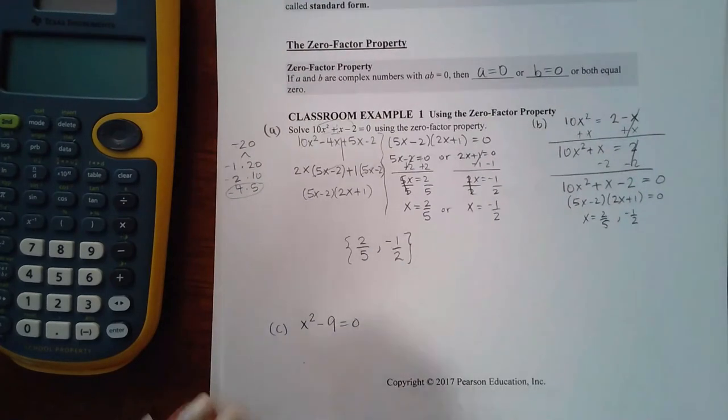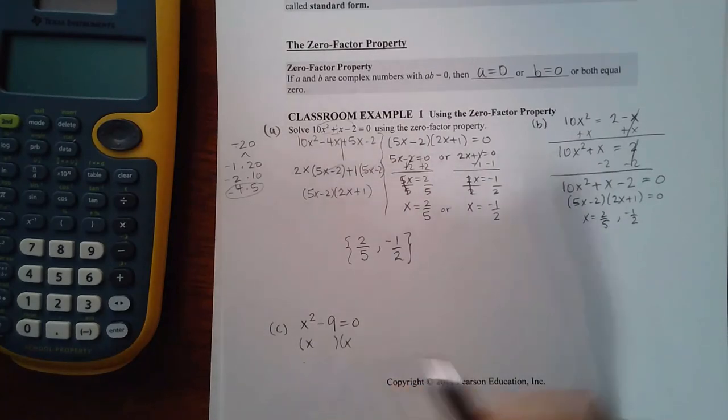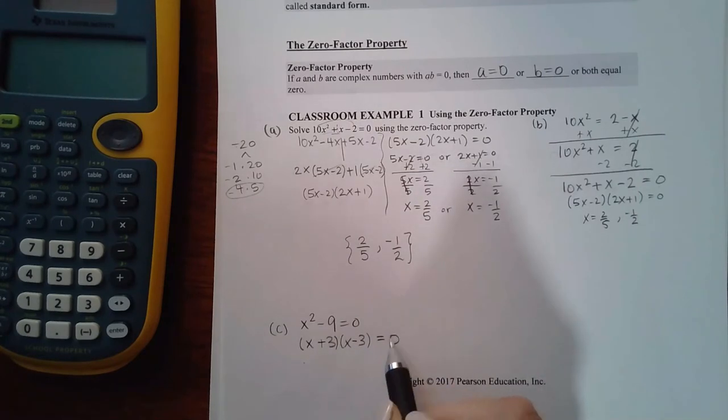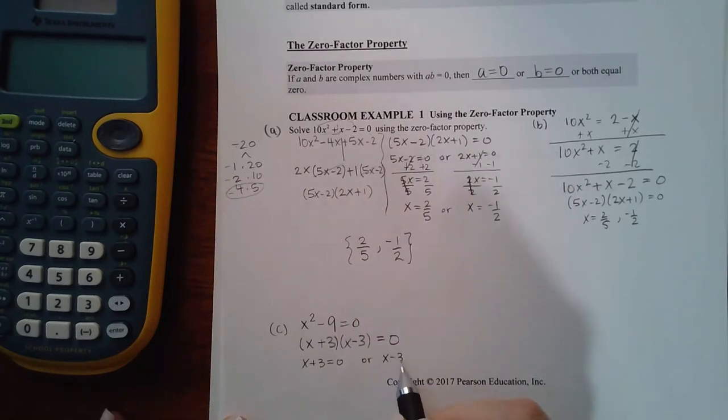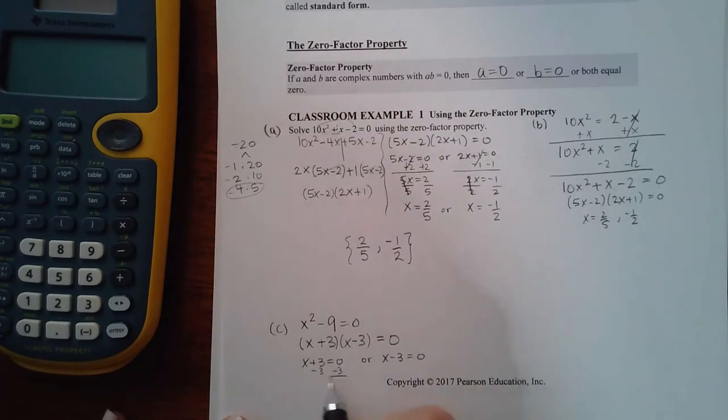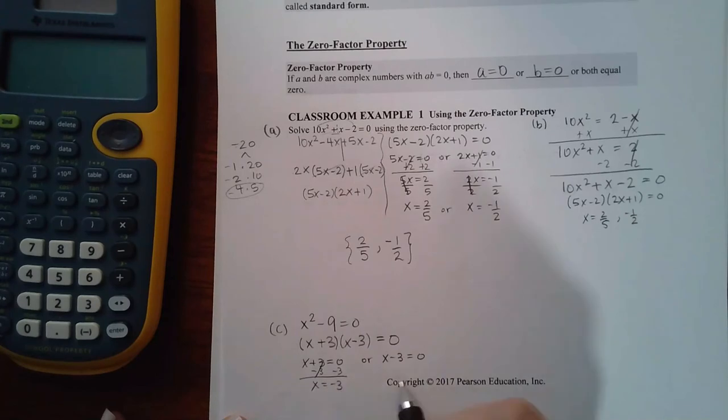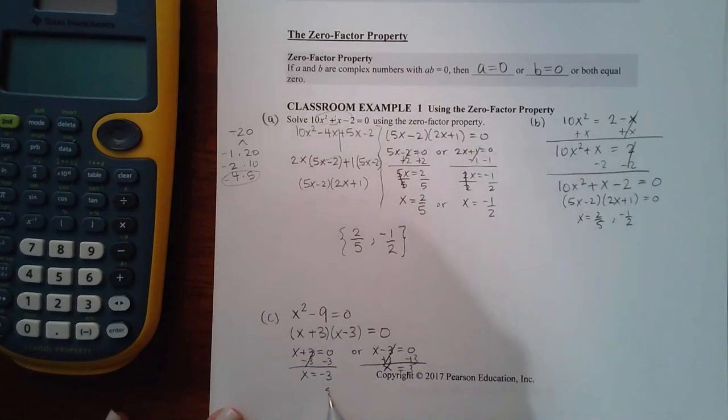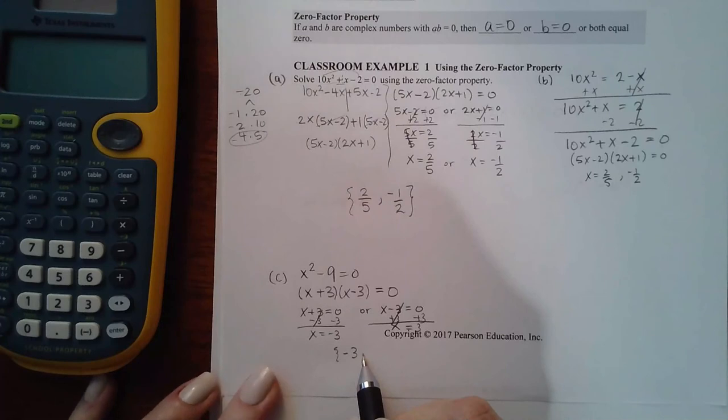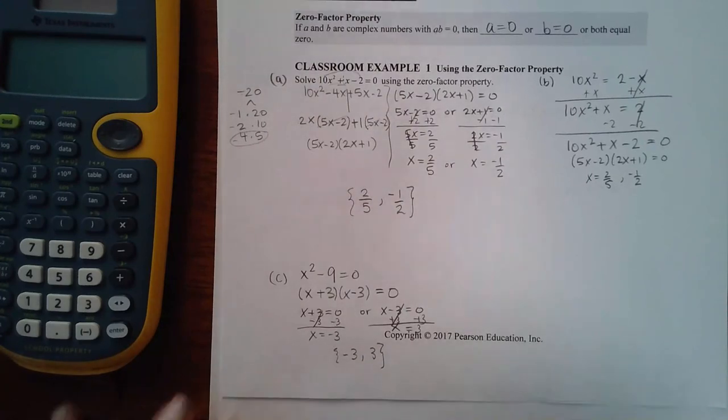From this third example, notice that this is not a trinomial, so I can't do the ac method. It's the difference of squares, so we factor this: x times x is x², 3 times 3 is 9, 1 with the plus, 1 with the minus. Now you have your factored version equal to 0, so that means that x plus 3 could equal 0 or x minus 3 could equal 0. If I solve each one of these equations for x, we get that you could have negative 3 or positive 3 as a solution.